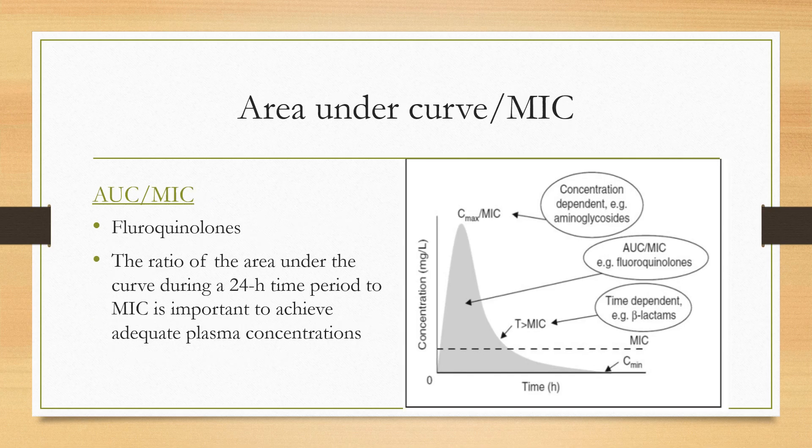For some antibiotics, it is the area under the curve (AUC) to minimum inhibitory concentration ratio that is important for effective inhibition and killing of a microorganism. The antibiotics for which the AUC/MIC ratio is most important are fluoroquinolones. The ratio of the area under the curve during a 24-hour period to the MIC is used to achieve adequate plasma concentrations.